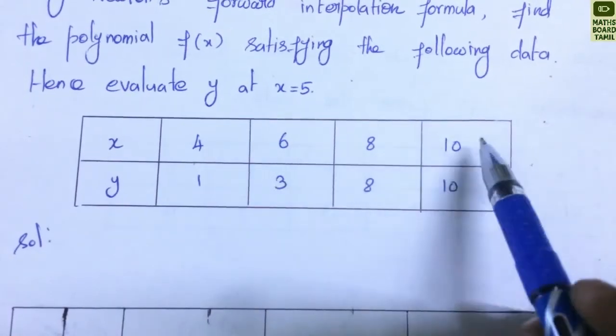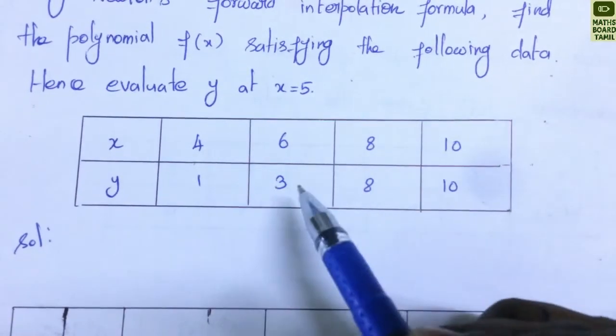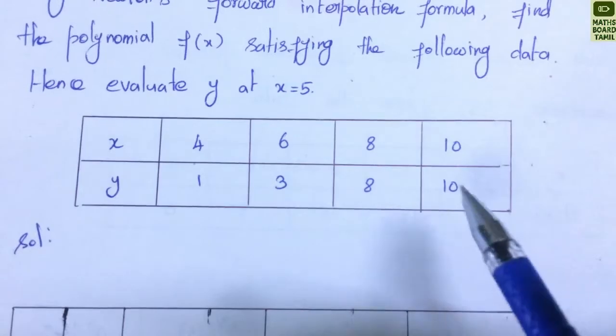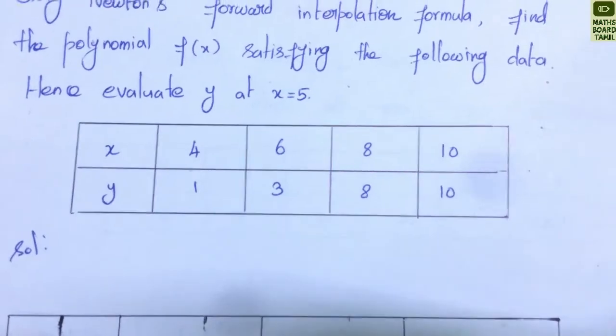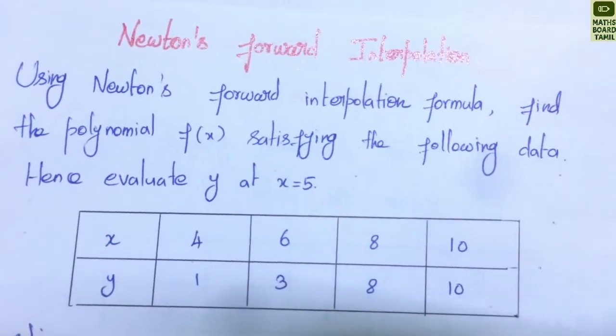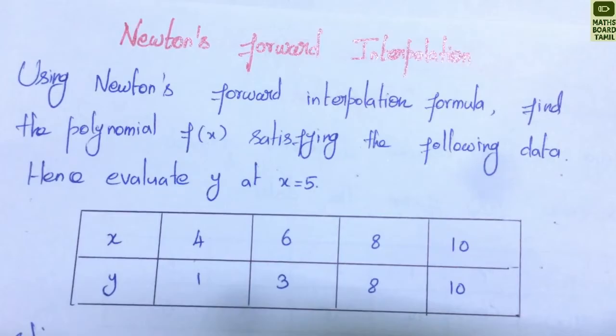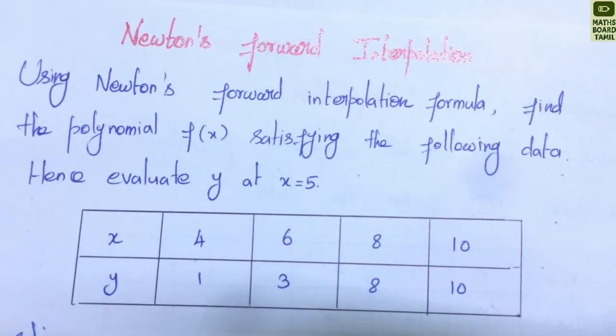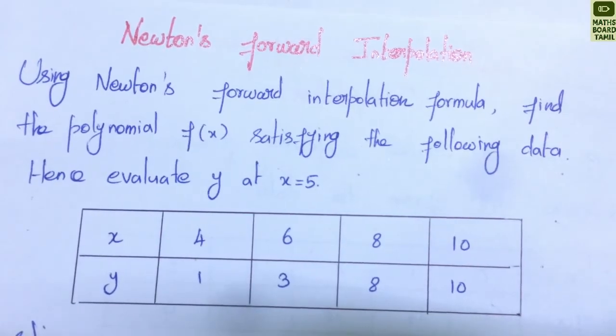The given data values are: x = 4, 6, 8, 10 and y = 1, 3, 8, 10. So we will find the value using Newton's forward interpolation and construct the divided difference table.